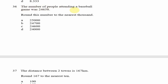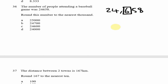Looking at question 36: the number of people attending a baseball game was 24,658. Round this number to the nearest thousand. To do this, we look at the digit in the hundreds place. If that digit is 4 or less, we keep the thousands digit; if it is 5 or greater, we round the thousands digit up by one.